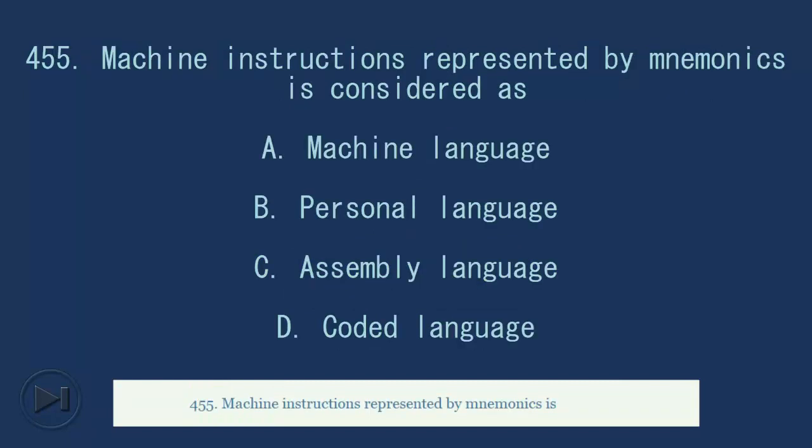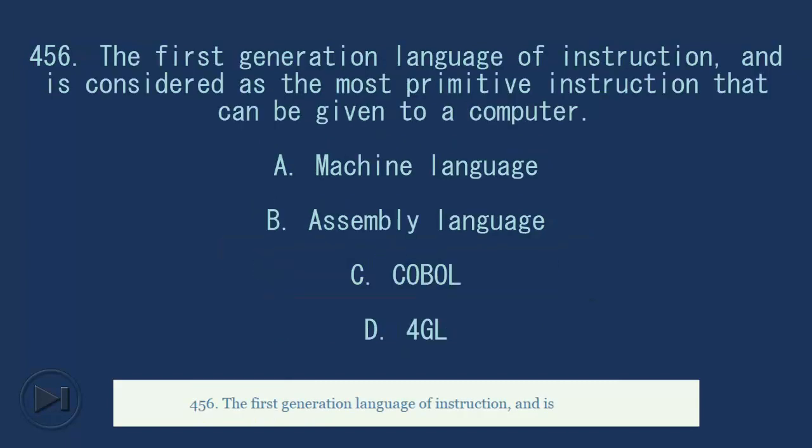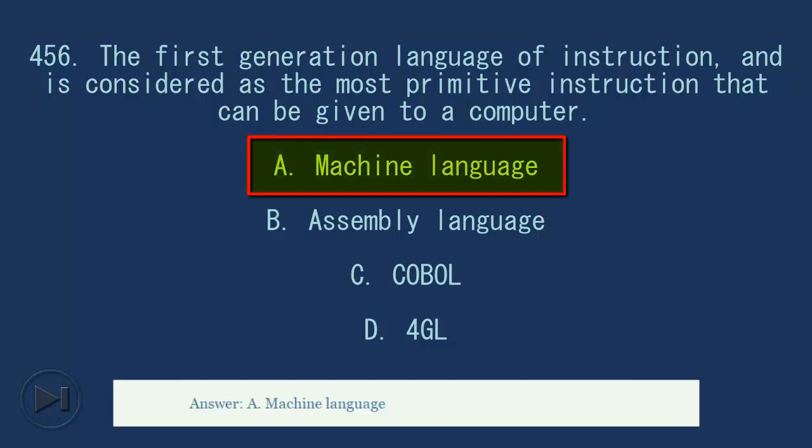455. Machine instructions represented by mnemonics is considered as the first generation language of instruction and is considered as the most primitive instruction that can be given to a computer. Answer, A. Machine language.